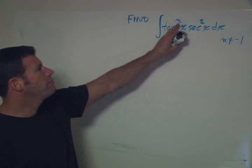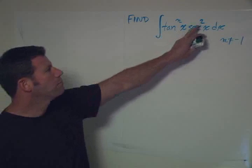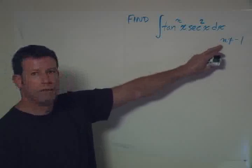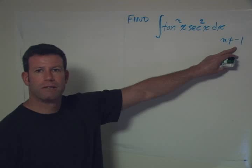Find the integral of tangent to the nth power of x, secant squared of x, dx, with the condition that n not be equal to minus 1.